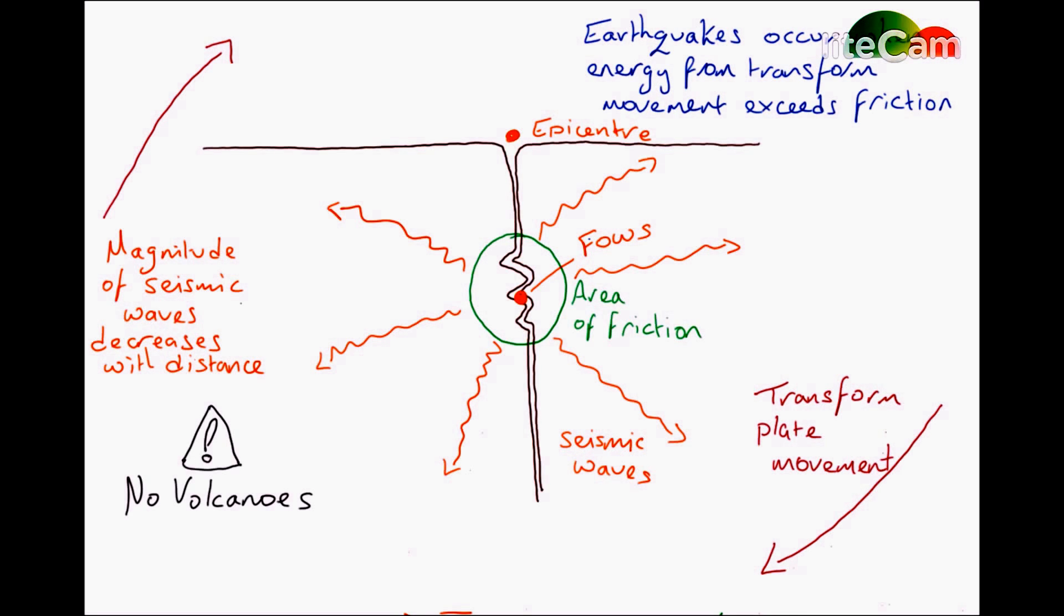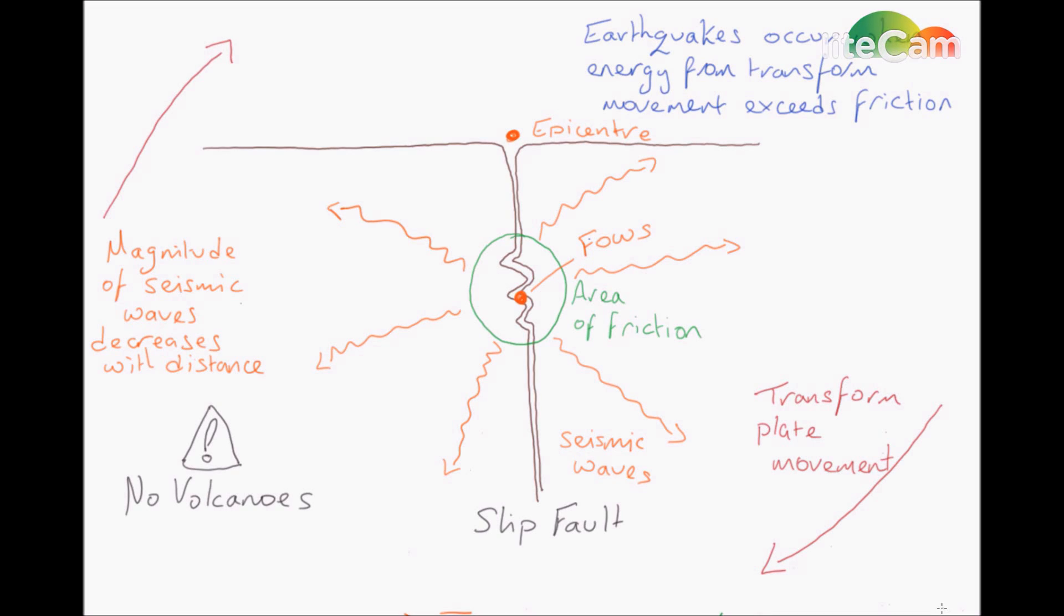So again, on a conservative plate boundary you have this area of friction. When the movement of the plate exceeds the friction, you get an earthquake or you get this type of movement.